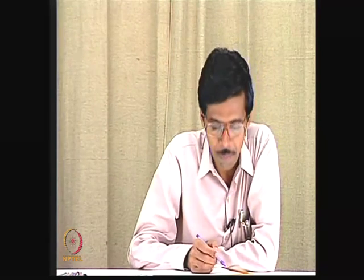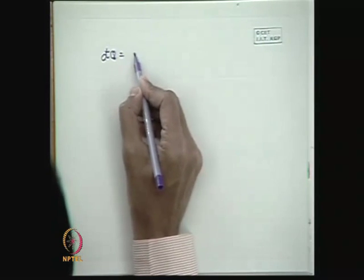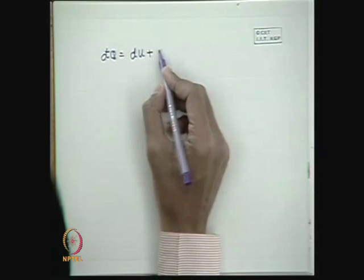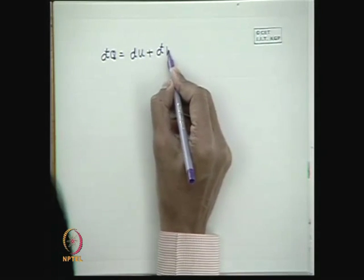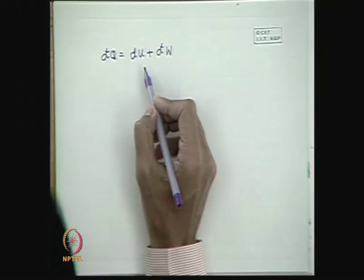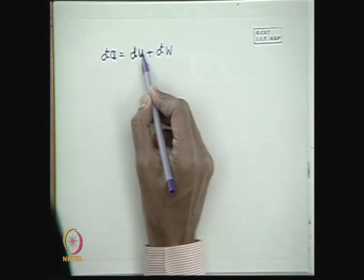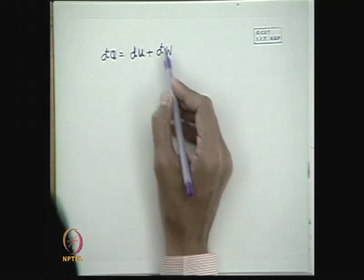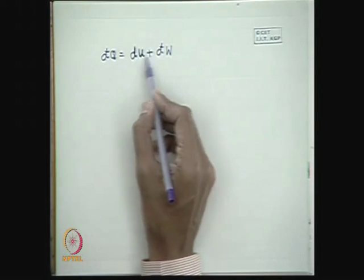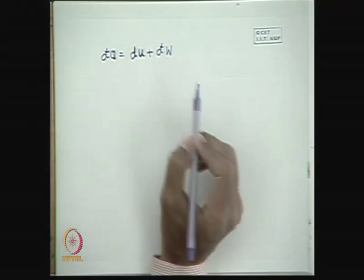Let me first tell you the first law. If you see that the first law applied to any process, it can be written as dQ = dU + dW. We have already recognized that the first law when applied to a stationary or closed system, where internal energy is the only intermolecular energy U, then the first law for an infinitesimal process can be written as dQ = dU + dW, where the d with a cut represents an infinitesimal amount of work.